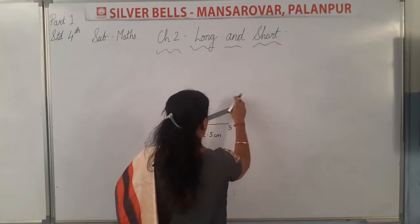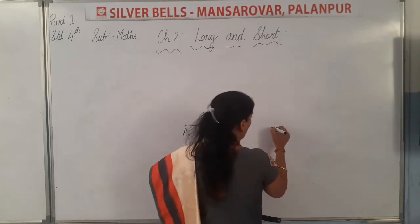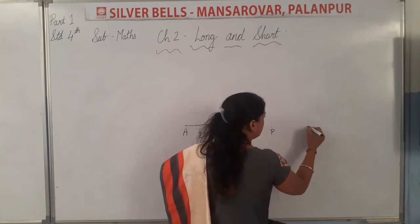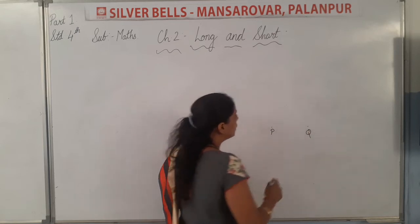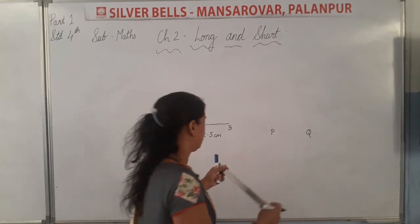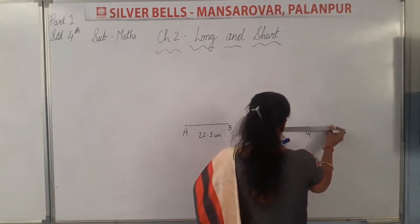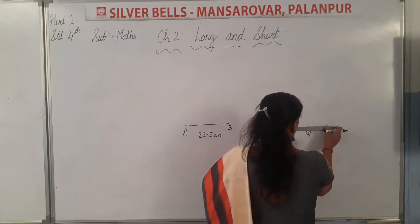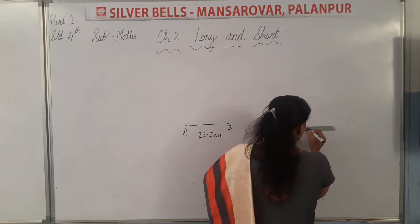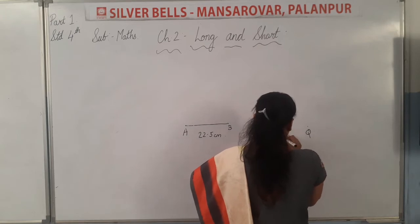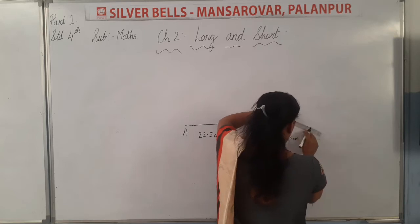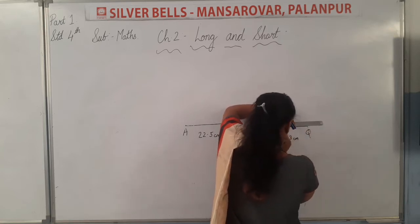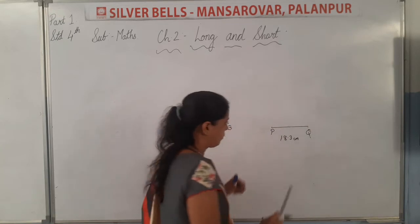So, next example over here. Suppose I have two points: P and Q. The question is — measure the length. So, how can you measure? Keep the scale perfectly with the first point exactly on the point and the second one over here. Now, my reading is — after 18, I am having three lines: 1, 2, and 3. So, my reading is 18.3 centimetre. And then you have to draw a line. Understood?